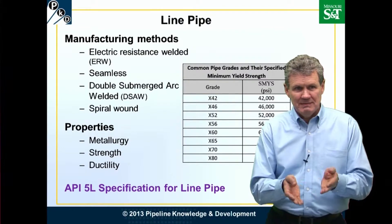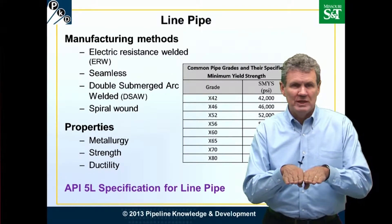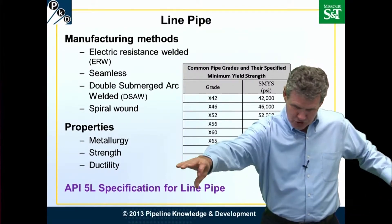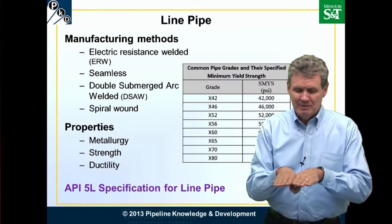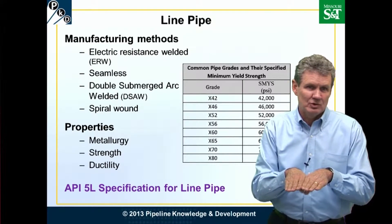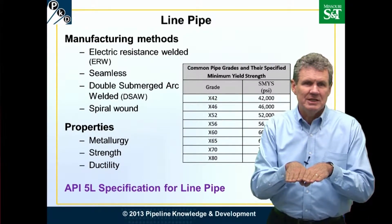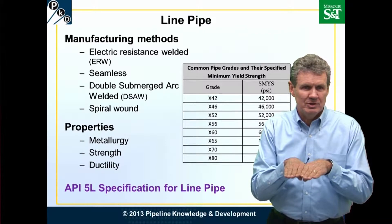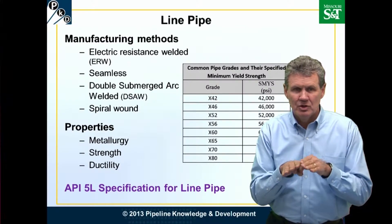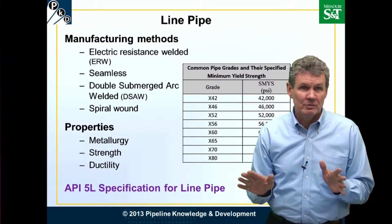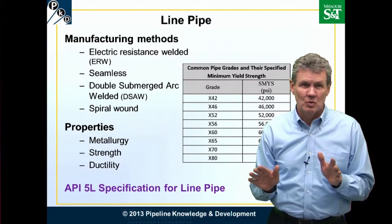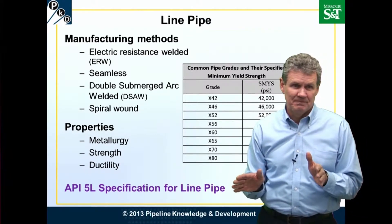So if we bring this pipe together and fold it up into a long tube, we begin to weld it by, in one case, putting electrical current onto it and pushing the edges together. The edges melt and fuse together — no filler material is put in. This is electric resistance welded pipe.